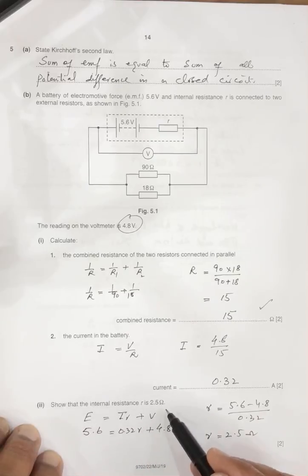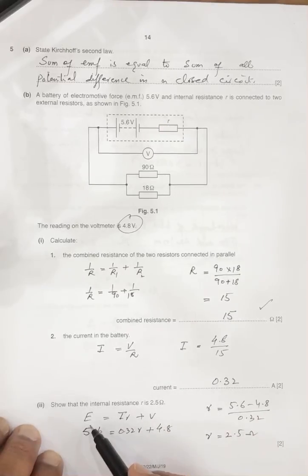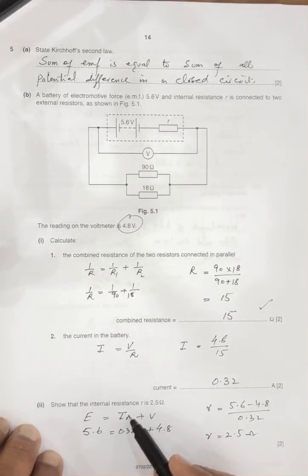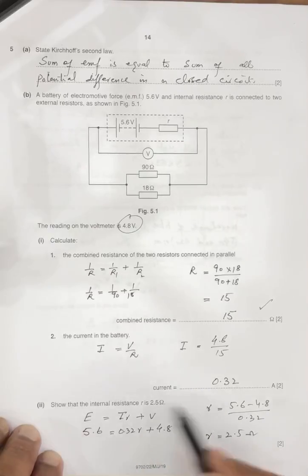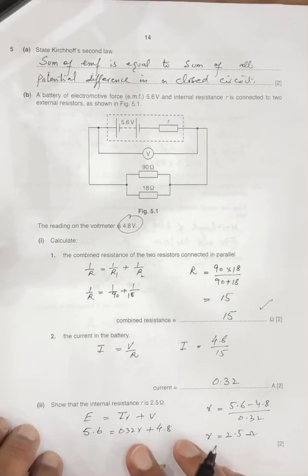Show that the internal resistance is 2.5. Look, EMF is equal to loss potential plus the voltage. So EMF is 5.6, IR, 0.32 into internal resistance, and the terminal potential, your voltage is 4.8. So by calculating this formula, R is equal to 2.5. So this is proved.